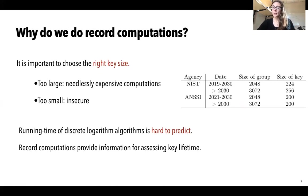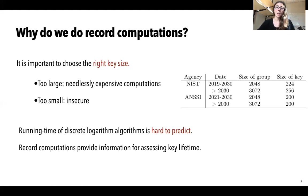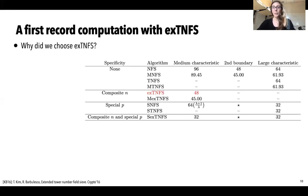In this work, we present a record computation done with a variant of the number field sieve called the tower number field sieve algorithm. Why do we care about record computations? For a cryptographic protocol, it is important to choose the right key size — too large is needlessly expensive, too small is insecure. The running time of discrete logarithm algorithms is hard to predict, and record computations give us useful information for key lifetime estimation. This motivated us to perform a record computation with the extended tower number field sieve (XTNFS) algorithm, which had never been implemented before.